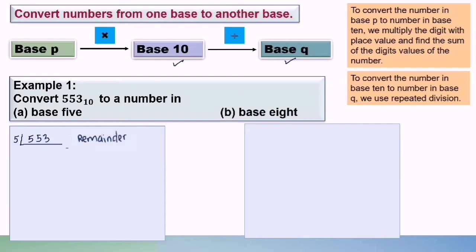First, we write 553 divided by 5. We divide to get 110, and the remainder is 3. So we write the remainder 3 at the side, and 110 at the bottom.